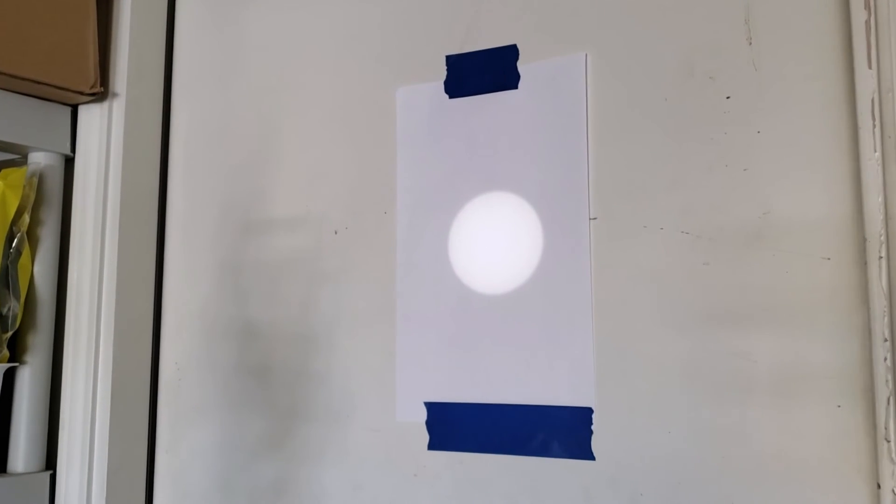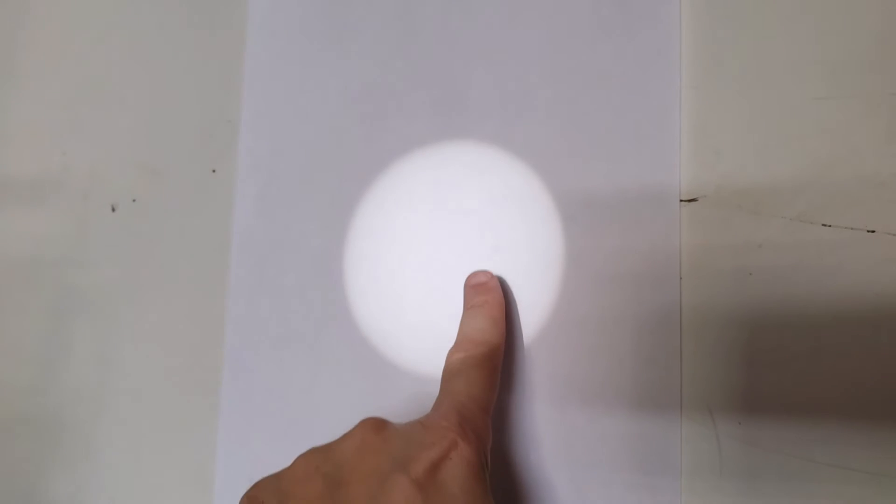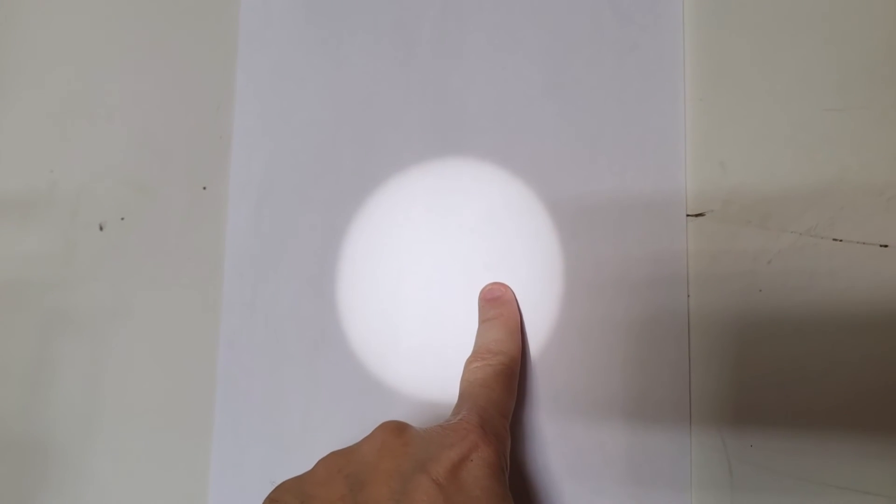So, right now, we're projecting about a four inch diameter sun onto this piece of paper that's on the door. And it's hard to see, but there is actually a sunspot today. I'll try to point it out. It might not show up on camera, but it's pretty good. It's a little windy out, so the image is shaking a little bit.